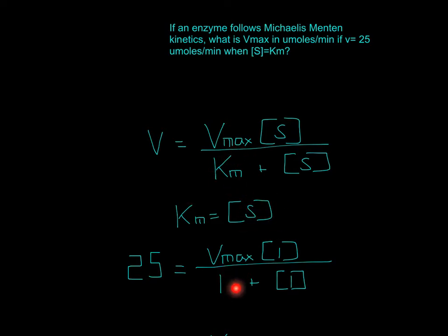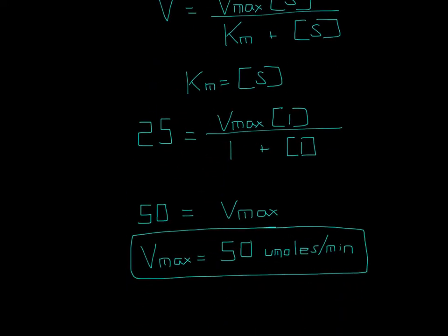Km would be 1 here, and substrate concentration would be 1 here, and this one would also be 1. Now let's solve this out. 1 plus 1 is 2, so we'd multiply each side by 2. This would cancel out. 2 times 25 would be 50, and that would equal Vmax.